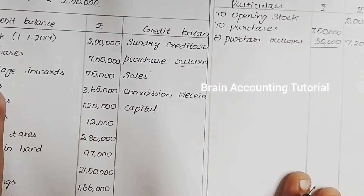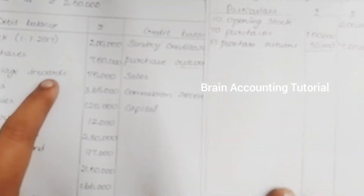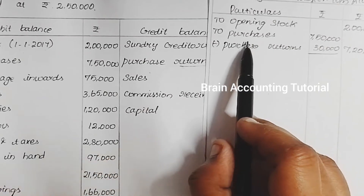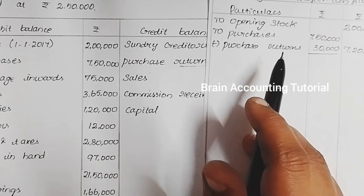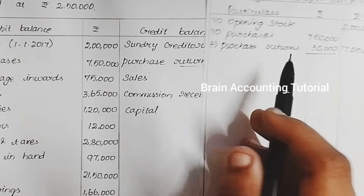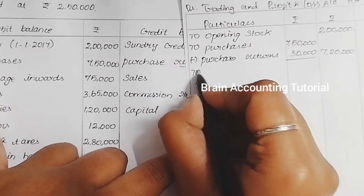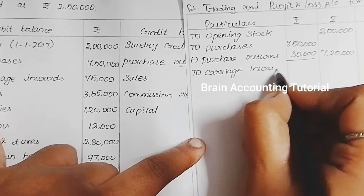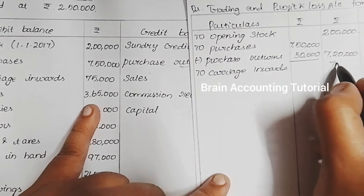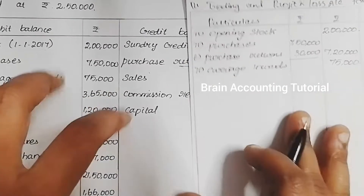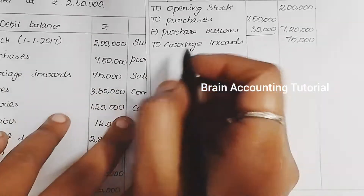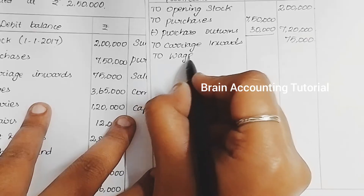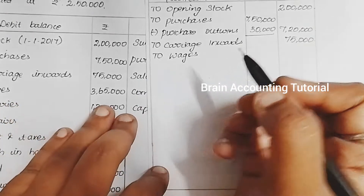Next, carriage inwards — carriage inwards is 75,000. Then wages: wages are the salaries paid to daily laborers, while salaries are monthly remuneration. Wages amount to 3,65,000.